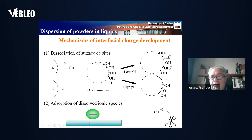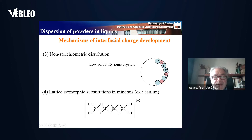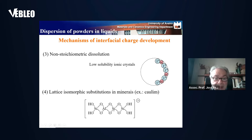At low pH, the surface becomes enriched in hydrogen ions, so positively charged, while at high pH, the OH groups predominate, conferring a negative charge to the surface. But there are other surface charge development mechanisms, such as absorption of dissolved species from the solution that also bring charge to the surface, or non-stoichiometric dissolution that happens with several crystals like silver iodide, silver chloride, and the materials we are going to discuss in this presentation.